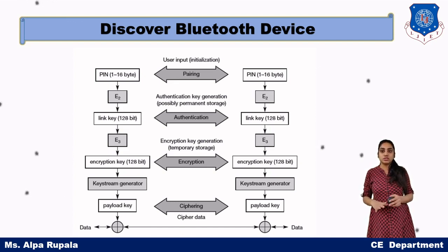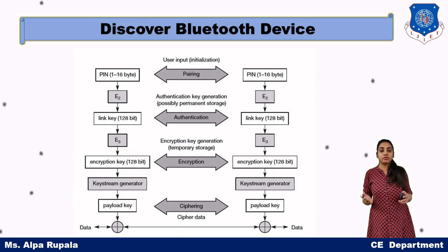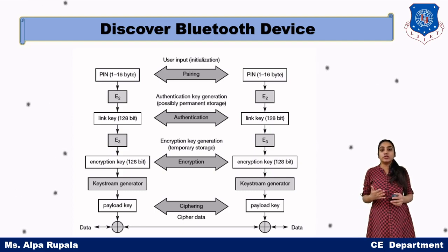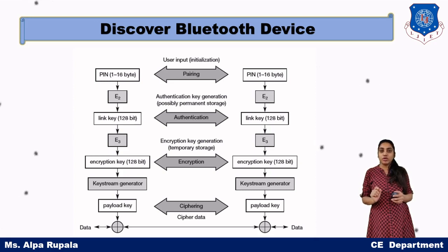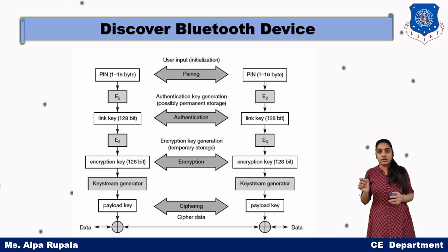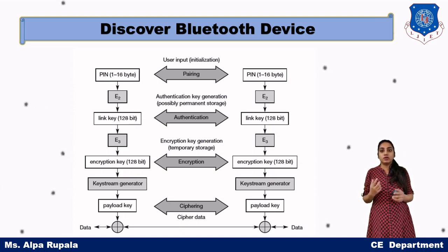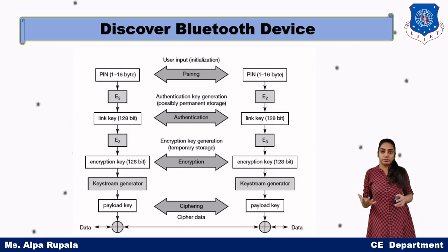After pairing, the next step is authentication. If we are communicating for the second time and the devices are already paired, then the first step is authentication, not pairing. In authentication, the link key already stored permanently in the paired devices is collected. We send a random number to both devices and, using the E3 algorithm, we generate the encryption key. If the two encryption keys match, we can confirm that both devices are already paired and authenticated.